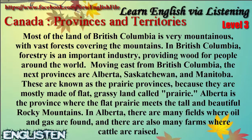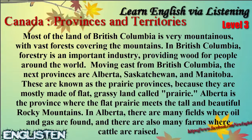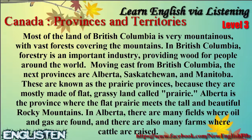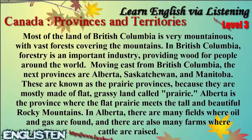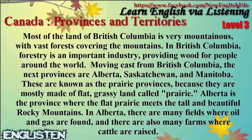Moving east from British Columbia, the next provinces are Alberta, Saskatchewan, and Manitoba. These are known as the prairie provinces, because they are mostly made of flat, grassy land called prairie. Alberta is the province where the flat prairie meets the tall, beautiful Rocky Mountains. In Alberta, there are many fields where oil and gas are found, and there are also many farms where cattle are raised.